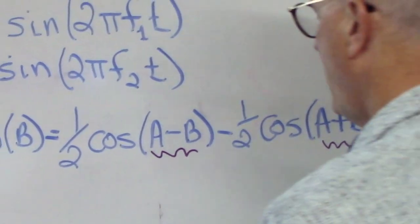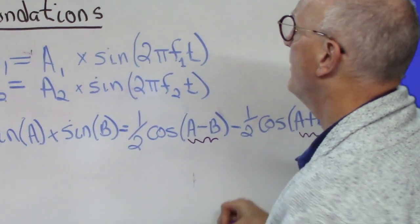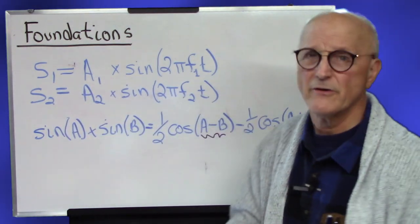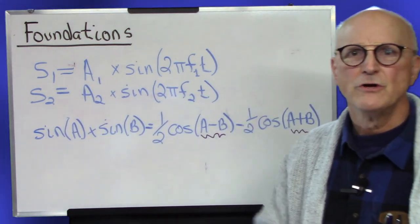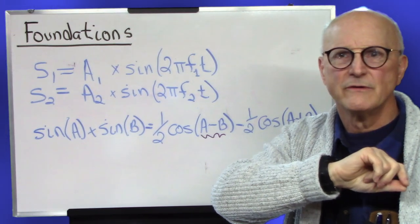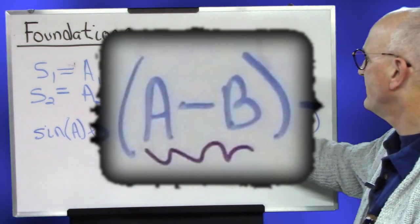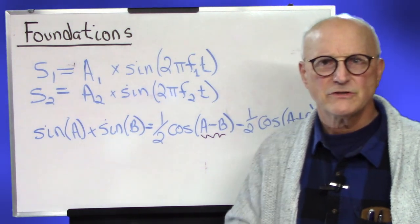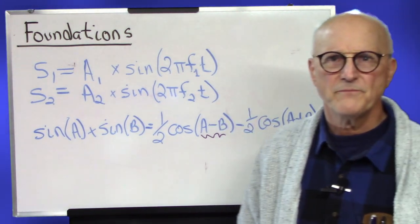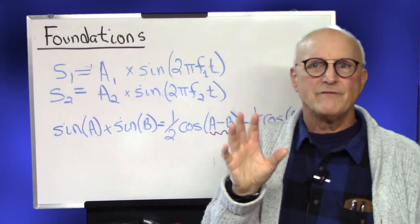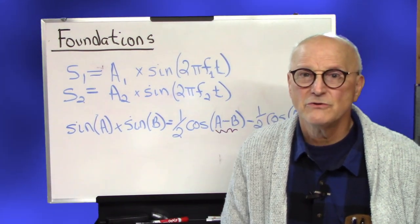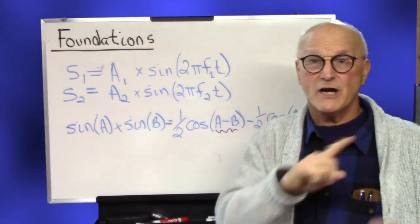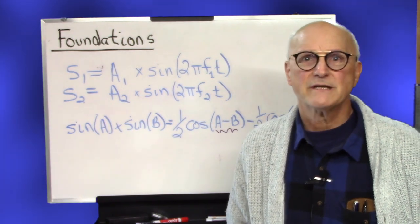Sine of A times the sine of B is equal to 1 half times the cosine of the difference between A and B minus 1 half times the cosine of the sum of A and B. Notice these terms. We now have, when we multiply signal one and signal two together, we now have two more signals. One at the difference and one at the sum of the two frequencies involved.